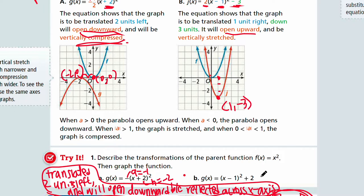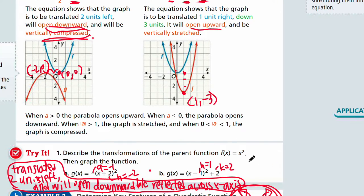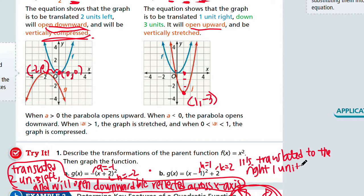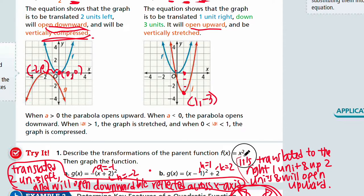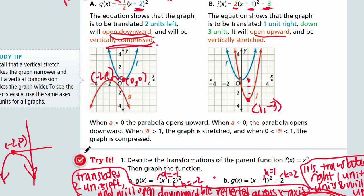Part B: H = 1 and K = 2, and both are positive. The equation shows the graph is translated one unit right and up two units, and will open upward because there is no reflection. When you graph Part A, the vertex is at (-2, 0), with just a reflection and no stretch or compression.